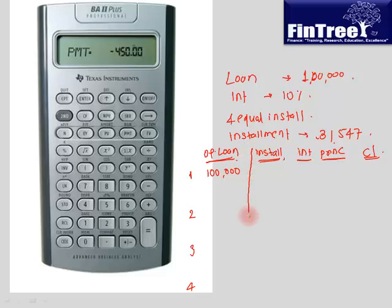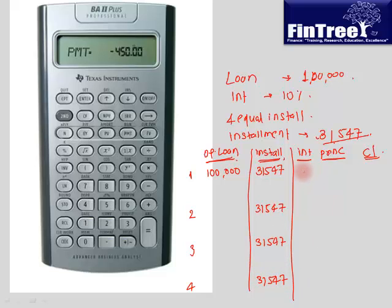Every year the installment that we pay is constant, and that's what the payment function meant, which is 31,547. The amount that we pay is going to remain constant. How much should be the interest for year 1? In year 1 I have loan of 1 lakh, interest rate is 10%, interest should be 10,000. But I am paying 31,547, I am paying extra, so that excess is paying toward repayment of loan. So my repayment of loan is 21,547.